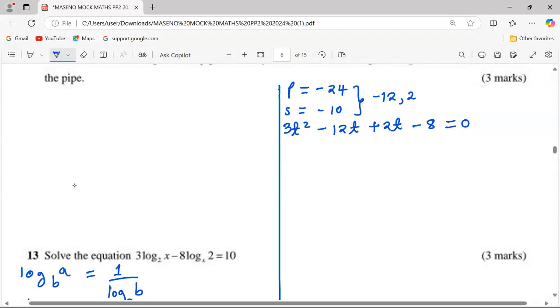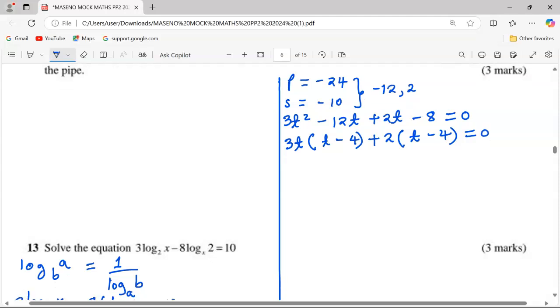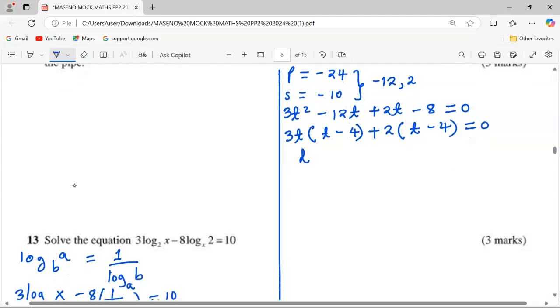At this point we can factorize in every two terms. We factor out what is common. In the first two, 3t is common, so that will remain with t - 4. In the next two, 2 is common, we remain with t - 4, and this equals 0, which means we can take the common factor (t - 4), then the other factor is 3t + 2 = 0.